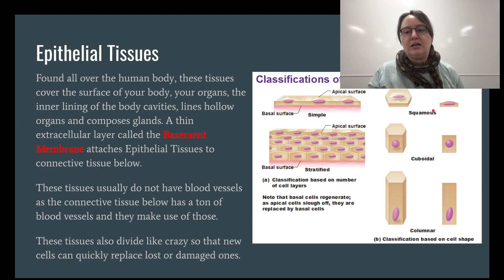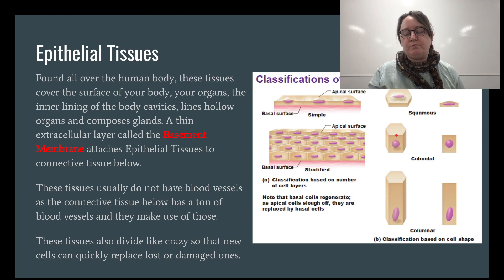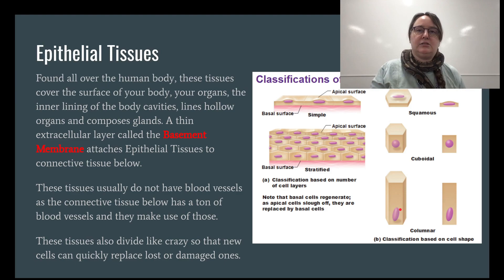Next up is cuboidal — as the name suggests, it's more cube-shaped, much chubbier than squamous. Squamous is definitely very thin and plate-like, while cuboidal is very cube-like. And then there are the columnar cells, which are the tall ones.